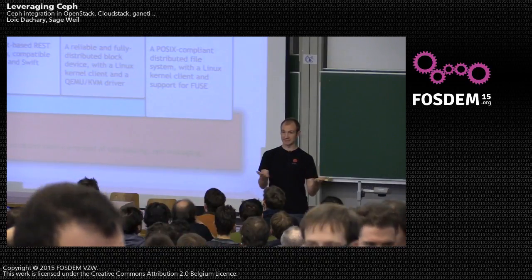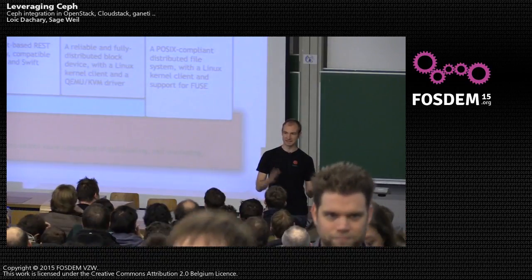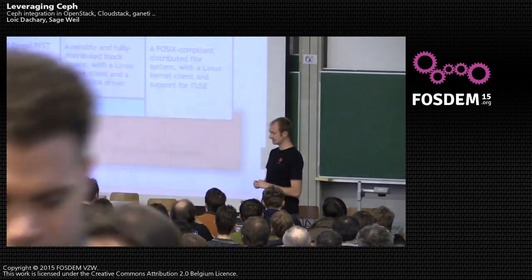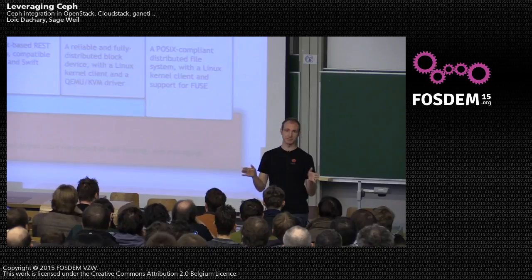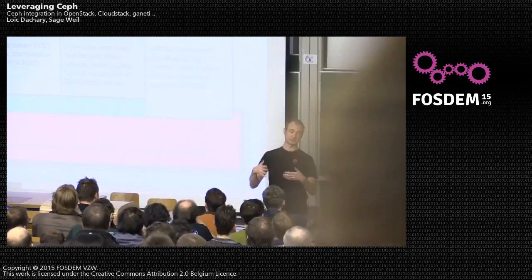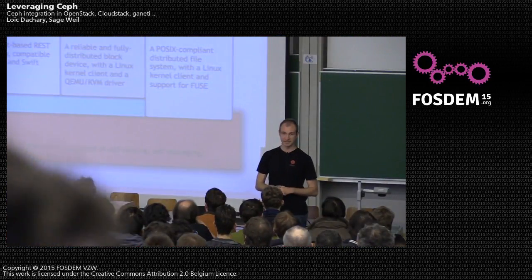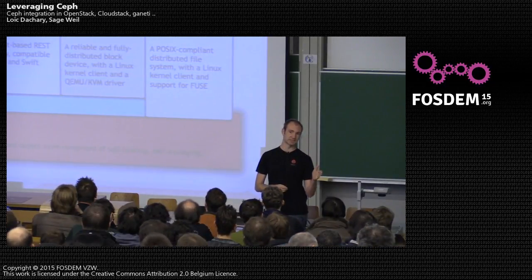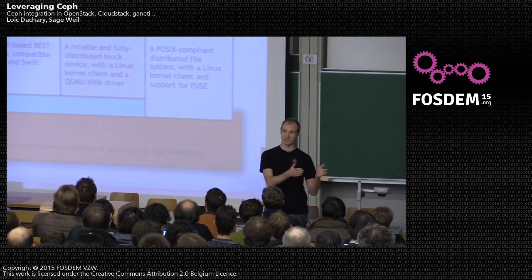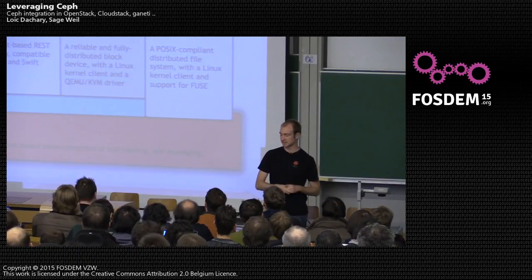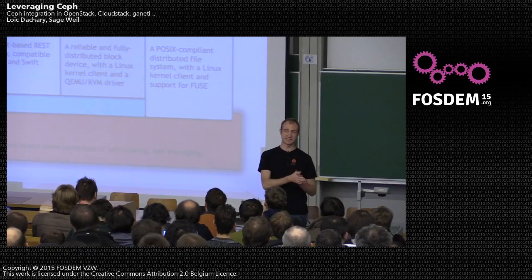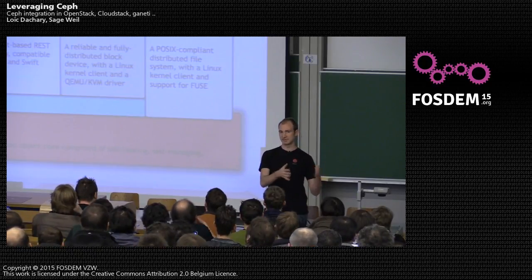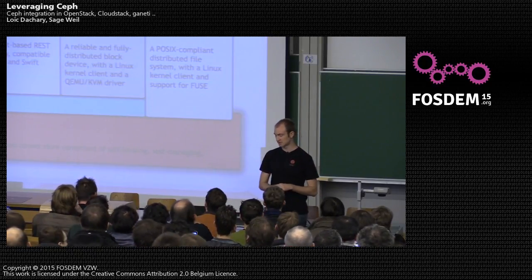LibRados is a library that lets you access that at the lowest level. It's got bindings in lots of different languages. And then we have three main services that we build on top of that. There's the Rados Gateway, which gives you a RESTful object storage interface, similar to Amazon S3 — which is the API we're targeting for compatibility — and also OpenStack Swift. We have basic compatibility with the Swift API, so you can drop in Ceph in place of either of those services.